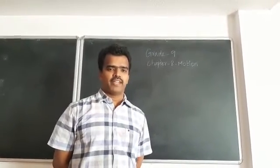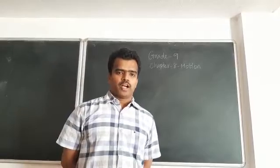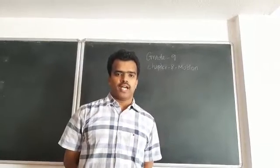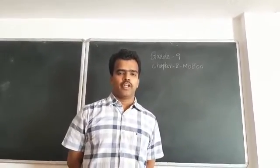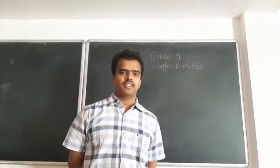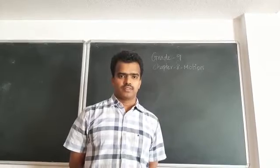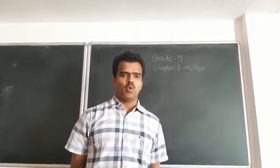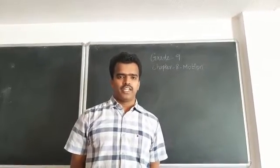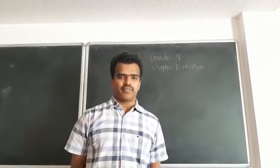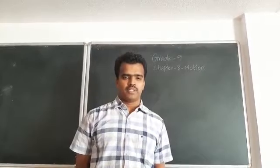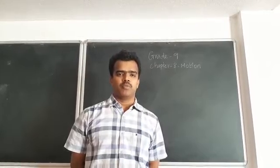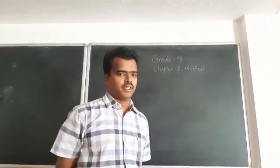Grade 9, Chapter 8: Motion. Before discussing motion, let's consider a daily activity. Suppose you start from your home to buy vegetables or other essential things. How much distance do you cover? The total distance covered by an object is what we call distance. To measure this distance, we need a specific reference point, which we call the origin. In this case, our home is the origin.